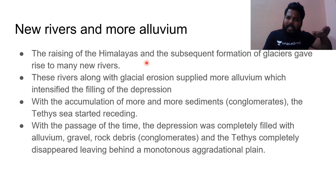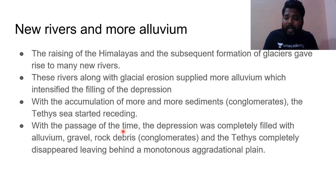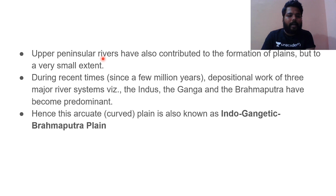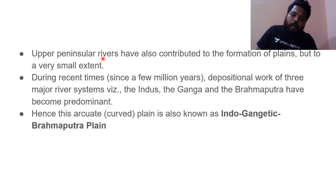The continuous deposition resulted in the complete filling of the depression — now there is no depression visible; it is a completely plane topography. This depression, or Indogangetic Trough or Indogangetic Geosyncline, can be associated with the ancient Tethys Sea. Upper peninsular rivers also contributed to the formation of the plains, but to a very limited extent — about 90% contribution comes from Himalayan rivers and only 10% from upper peninsular rivers like Chambal, Betwa, Kane, Sindh, Son, and Damodar.